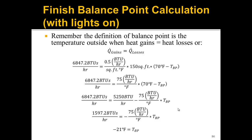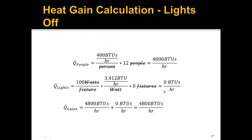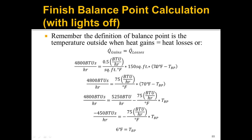That's a little surprising, so let's do the lights-off example. With lights off, there are zero BTU per hour from light fixtures, leaving only 4,800 BTU per hour from the people. Running the same math with 4,800 on the left-hand side, we get a balance point temperature of 6°F.